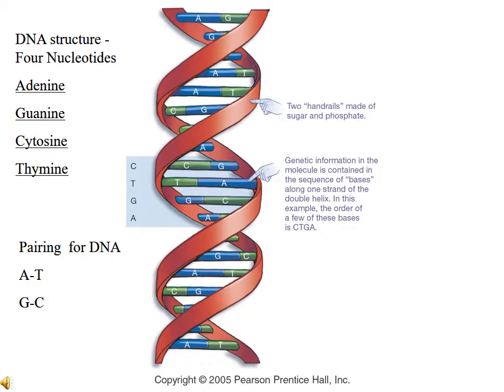The DNA structure has four nucleotides: adenine, guanine, cytosine, and thymine. As you can see, it's a double helix structure. Adenine will always combine with thymine, and guanine will always combine with cytosine. So one strand is essentially a complementary strand of the other.